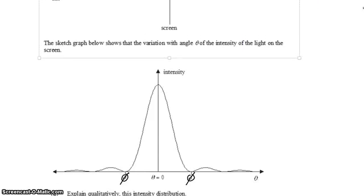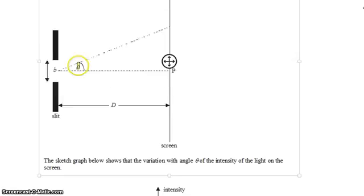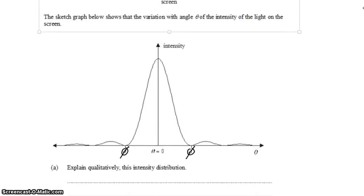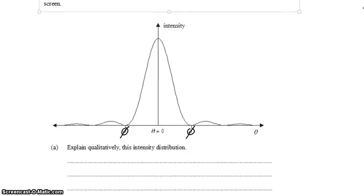The graph below shows the variation with the angle theta. Theta is this angle here. Of the intensity of the light on the screen, and we see an interference pattern. We want to explain qualitatively this intensity distribution.